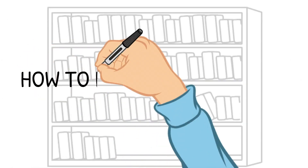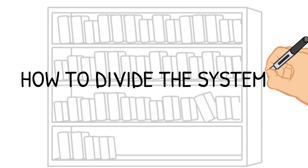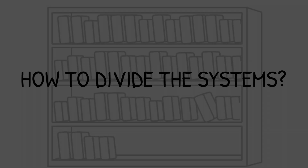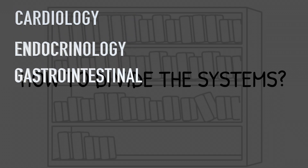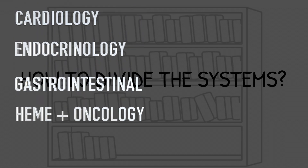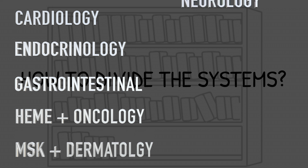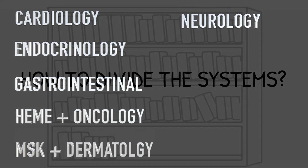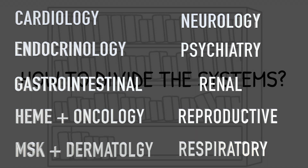But how to divide the systems and how to study them? You can divide it into 10 different systems: cardiology, endocrinology, gastrointestinal system, hematology and oncology, musculoskeletal and dermatology, neurology and special senses (which includes eyes and ears), psychiatry, renal, reproductive, and respiratory system. These will be the 10 different systems you'll study.